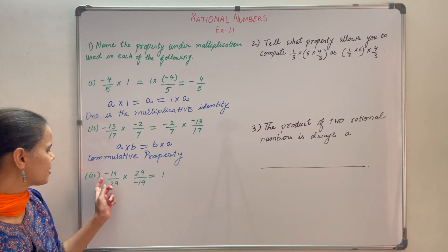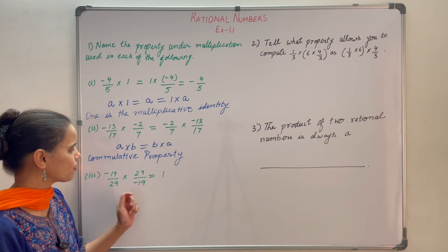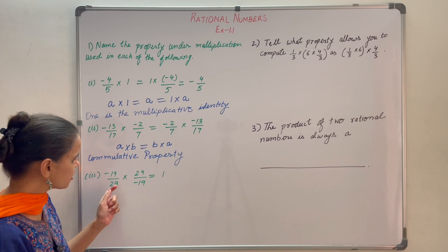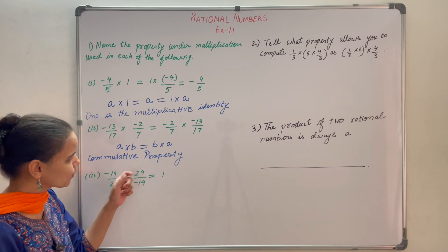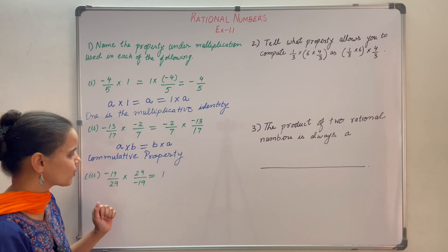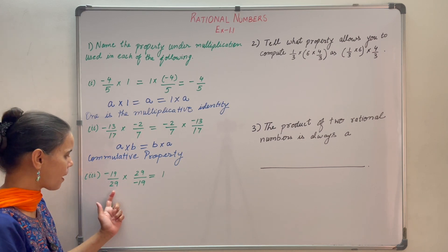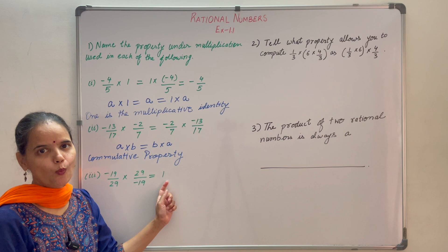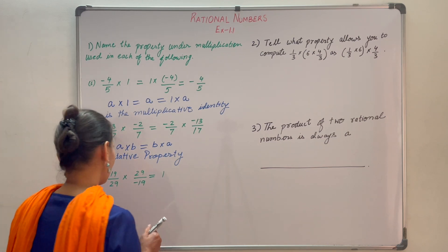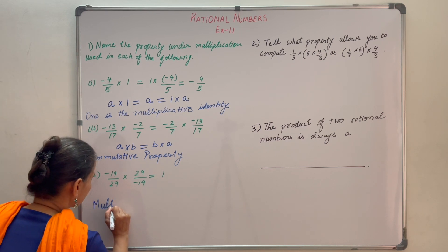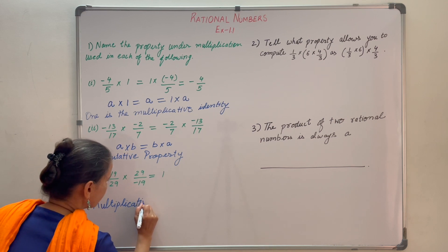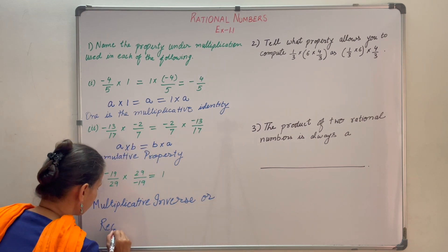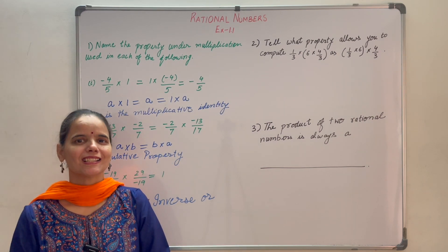Let us discuss the third part. Here minus 19 upon 29 into 29 upon minus 19 is equal to 1. You can see that this number is the reciprocal of this number — in the reciprocal, the numerator comes into the denominator and the denominator goes into the numerator. So when you multiply a number to its reciprocal or multiplicative inverse, you get the multiplicative identity, that is 1. The property used here is multiplicative inverse or reciprocal.